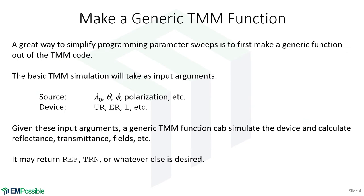Another suggestion: make a generic function for your numerical algorithm. Here we'll talk about making a generic function for the transfer matrix method, because this really cleans up your code. Instead of taking your big, long transfer matrix method code and putting a loop around it, you just have a small loop with a call to the transfer matrix method right in the middle. To make a generic function, we have to think about what are the inputs and what are the outputs.